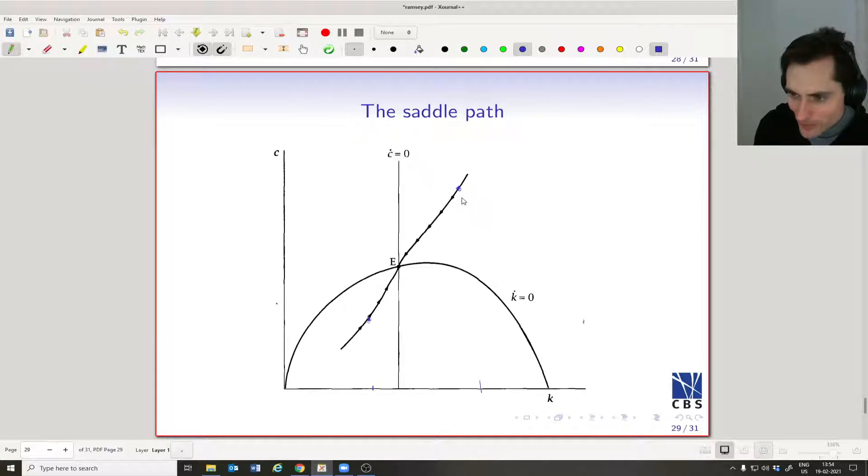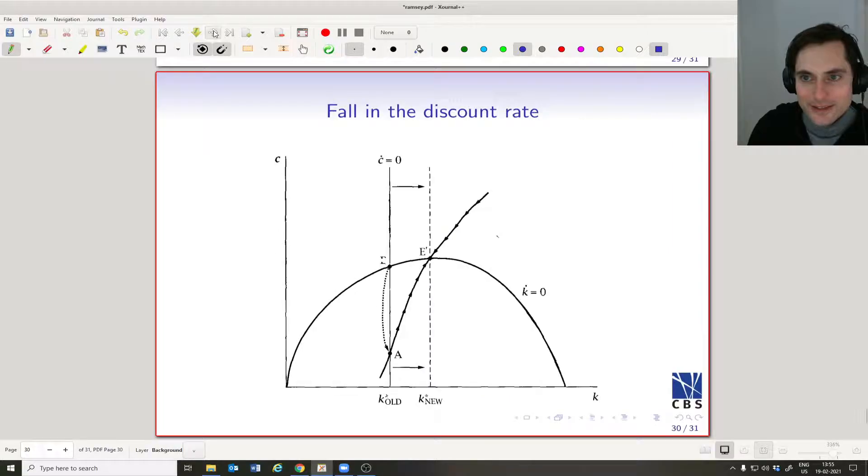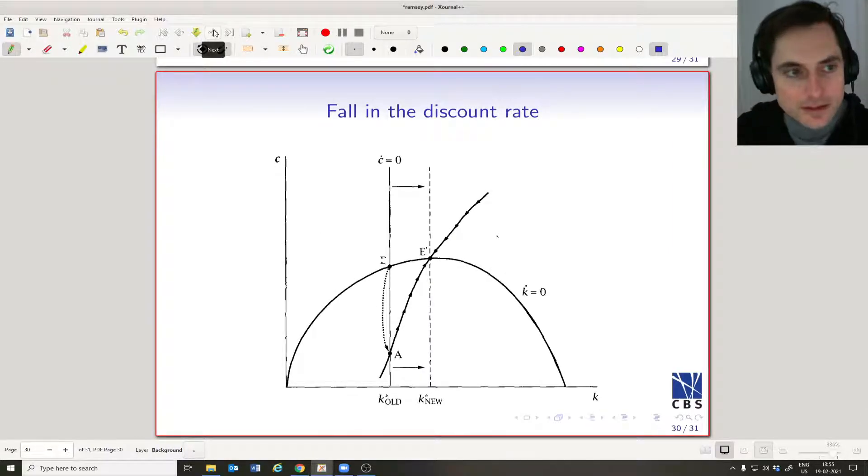If we started with the suboptimal level of consumption here, what would happen is we do this—boom—but we get the same argument which tells you why that's not optimal. You can get more consumption at every point by choosing a little bit less savings. Okay, I think this is the last slide with any content on it.